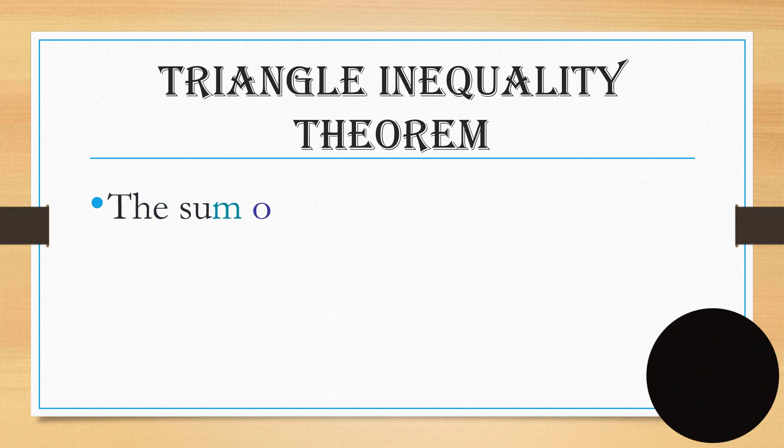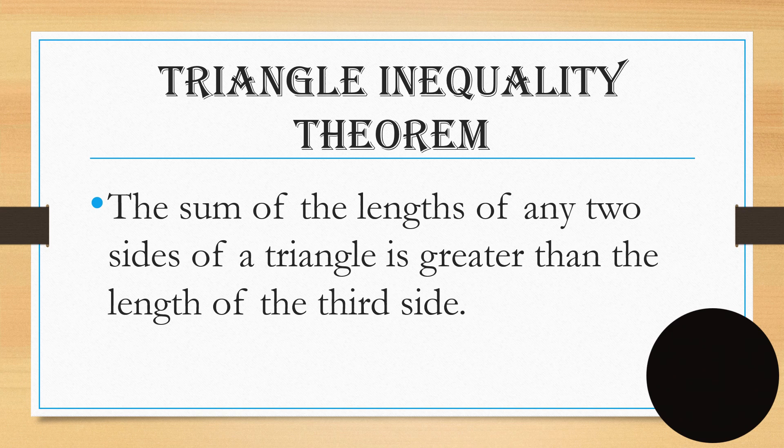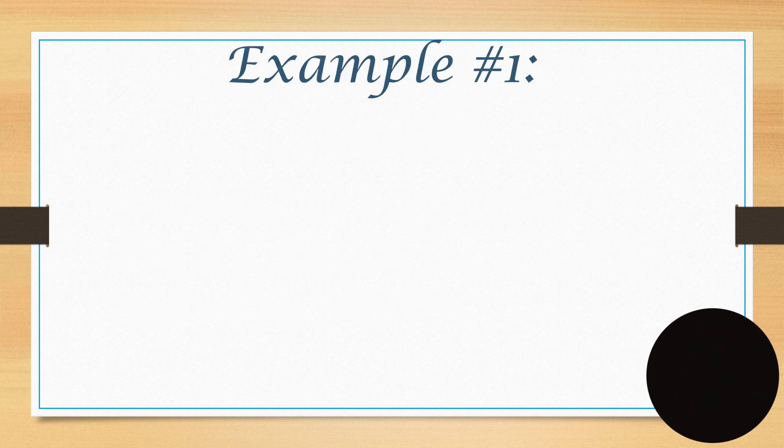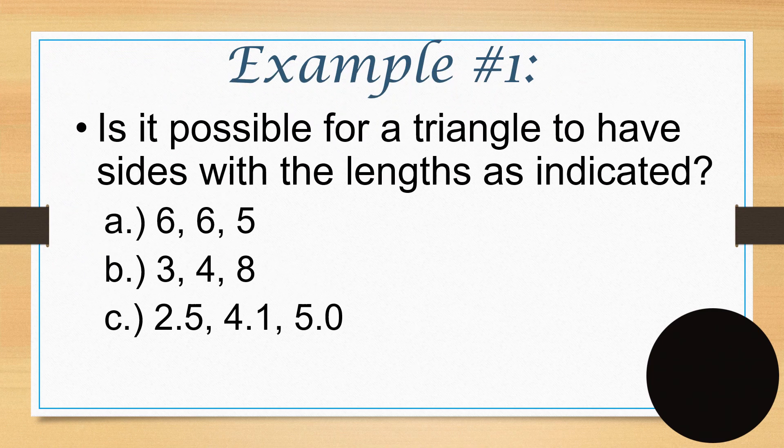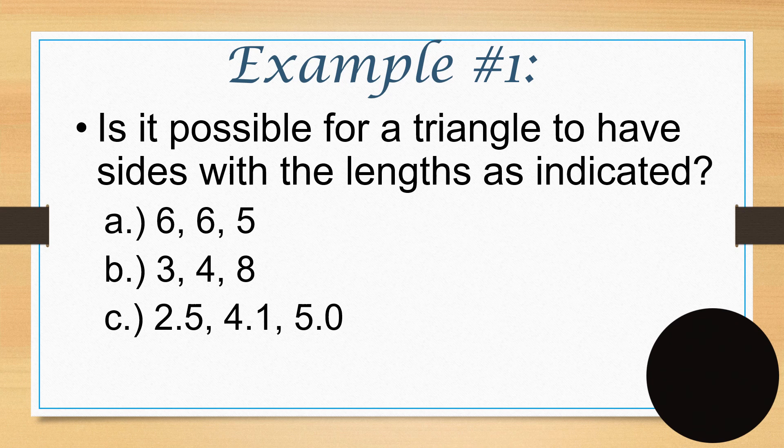For example, we have here triangle ABC, and we have here the exterior angle, and the two remote angles here. We could say that measure angle 1 is greater than the measure of angle B. So for Triangle Inequality Theorem, the sum of the lengths of any two sides of a triangle is greater than the length of the third side.